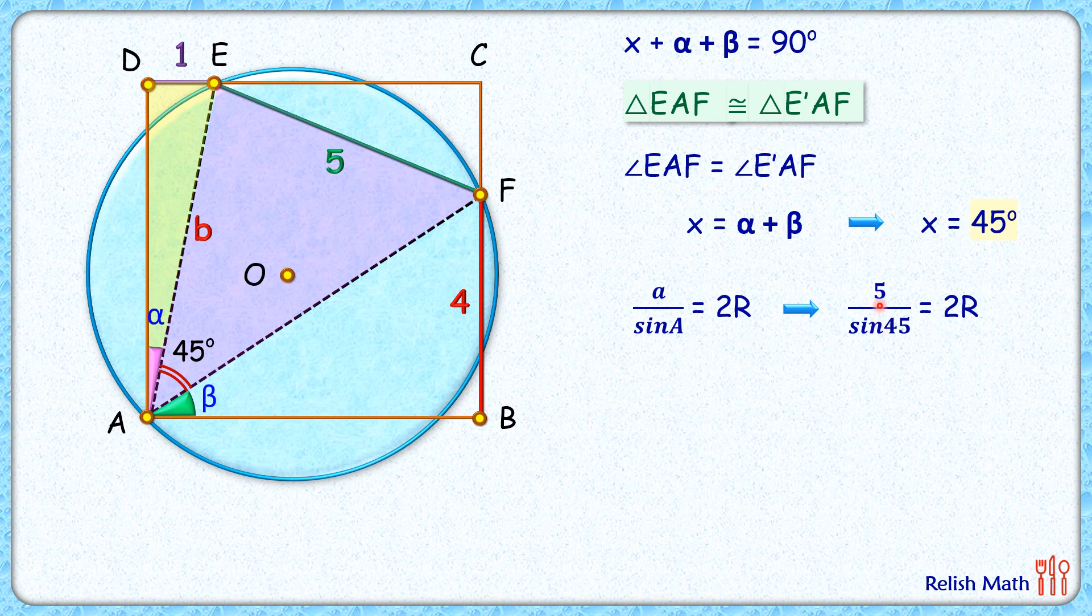Here, putting the value of sin(45°) as 1/√2, we get 2R = 5/(1/√2). R = 5√2/2, or in decimal form, R = 3.54 centimeters. And that's our answer.